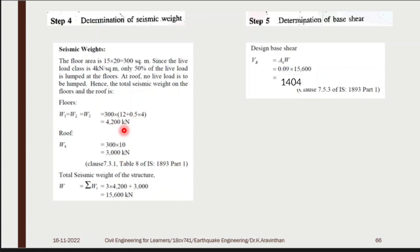So your total weight will be 4200 into 3 plus 3000, totally 15,600 kN. Now the AH into 15,600. So VB can be found out by AH times W. Multiply, you will be getting 1404 kN as your base shear. So earthquake is creating 1404 kN and it is pushing the building.